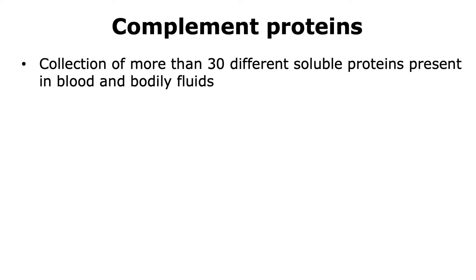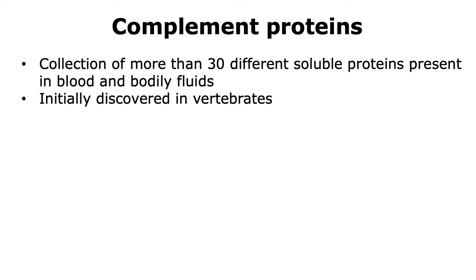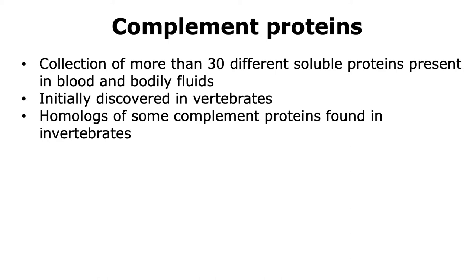The complement proteins are a collection of more than 30 different soluble proteins that are present in blood as well as bodily fluids. They were initially discovered in vertebrates; however, now we know that homologues of some complement proteins are also found in invertebrate organisms. A lot of complement proteins are thioester proteins, and in vertebrates the complement proteins are mainly synthesized in the liver.